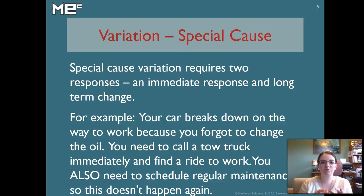Special cause variation requires two responses. It's usually a problem that needs an immediate response and then you have to make a long-term change to the system to prevent it from happening again. The example we use here is that your car breaks down on the way to work, probably because you forgot to change the oil. Immediately, you have to call a tow truck and get a ride to work. That's the immediate change you need to make. But in the long term, you probably need to schedule regular maintenance and change your system for taking care of your car to make sure that doesn't happen again.